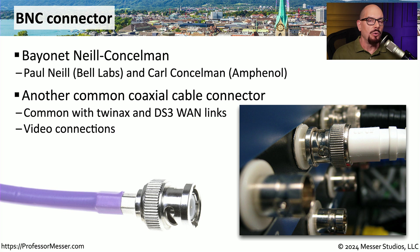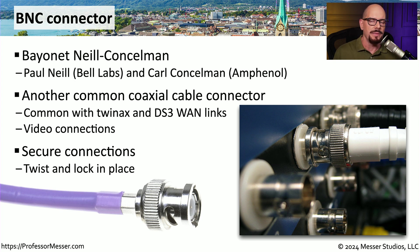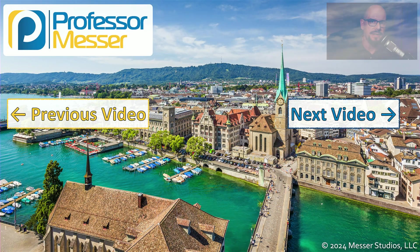If you're bringing in a WAN connection or any other type of coax, it's very possible you might use a BNC connection to lock it in place. One of the benefits of using BNC is that you're able to push the connector in and twist it, and it's not going to easily remove itself. You would need to untwist before removing it from the interface. Here's a close-up view of the BNC interfaces on a device — you twist the connector slightly and it's locked in place.